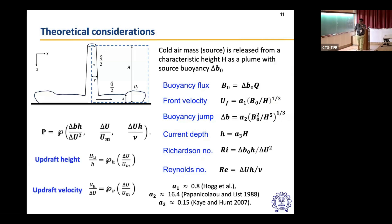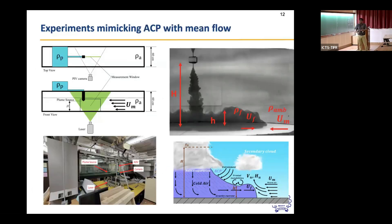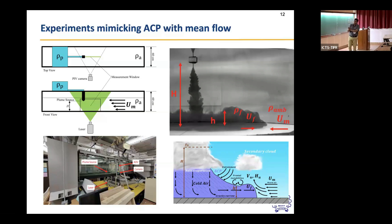We cast the problem in terms of three non-dimensional numbers. Since Reynolds numbers are quite high, that can drop off. We focus on finding updraft height and updraft velocity as a function of Richardson number, and create a criterion based on that. The experiment was set up in a recirculating water tunnel with velocity measurement done using PIV only — not PLIF — because we wanted to measure updraft height and updraft velocity.